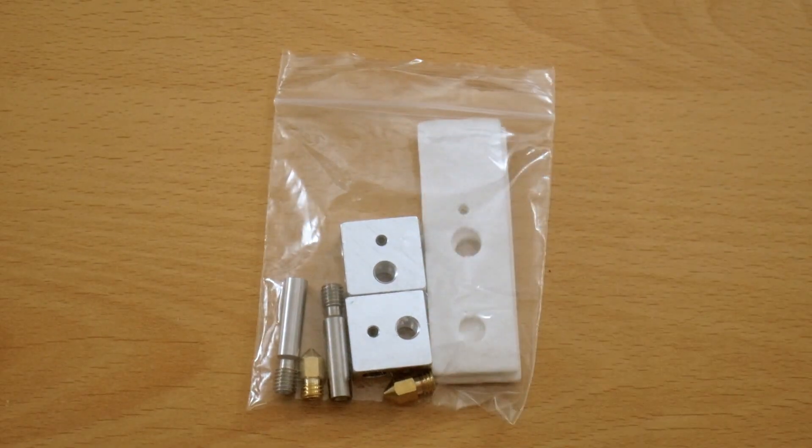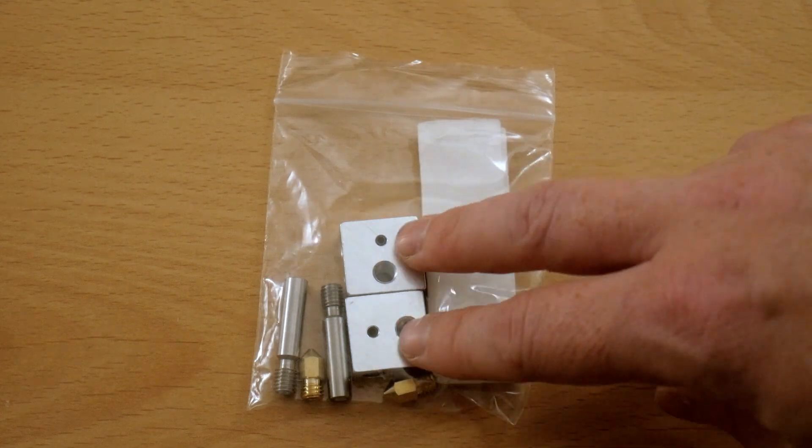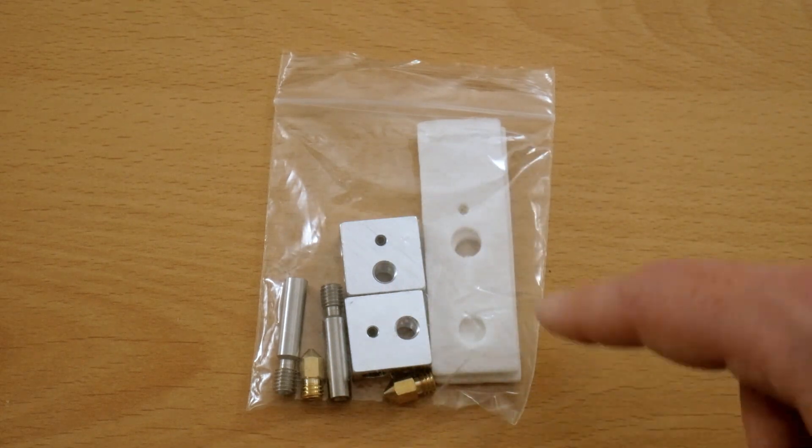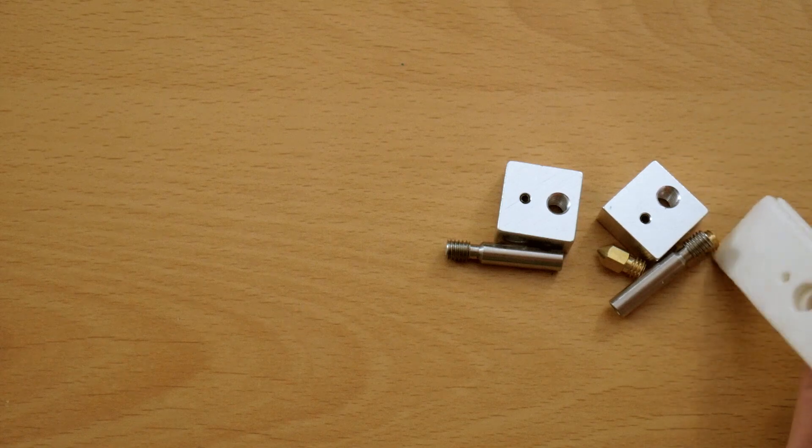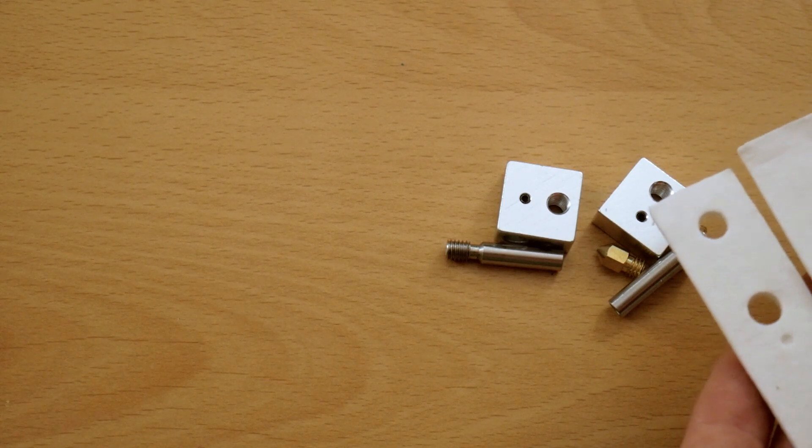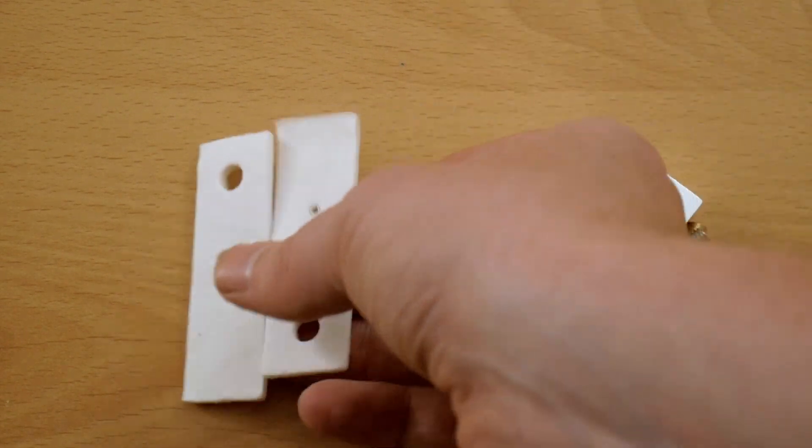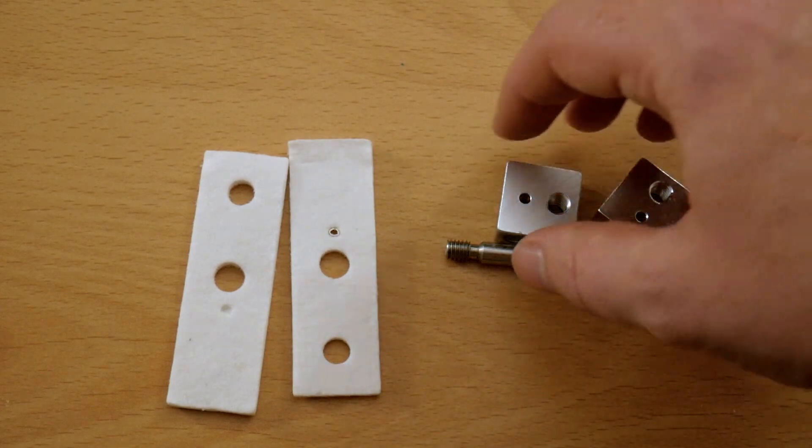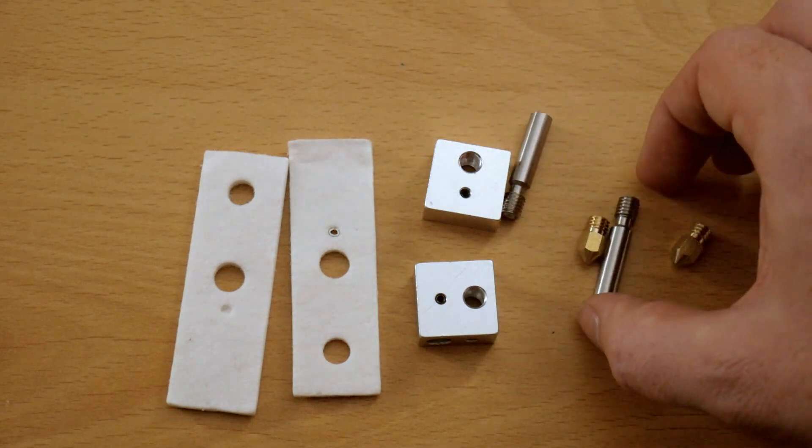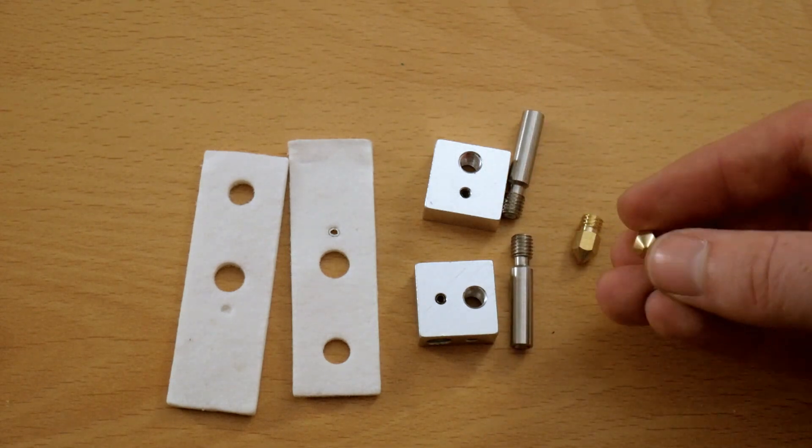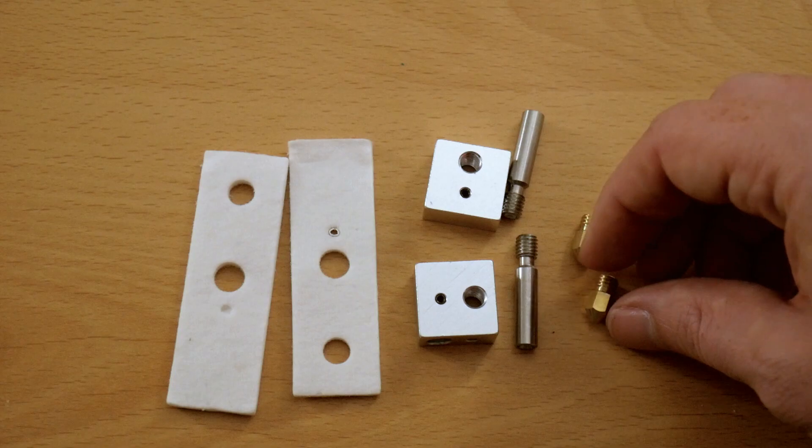And we have a brand new set. So we have two ceramic blocks, two new print heads, two throats and two pads to keep the heat, thermal insulate and stop the heat transference. So if we dive into the bag. So these are the pads that are pre-cut for the holes and two new ceramic blocks. The two new throats and the two new print heads. These are 0.4mm print heads.